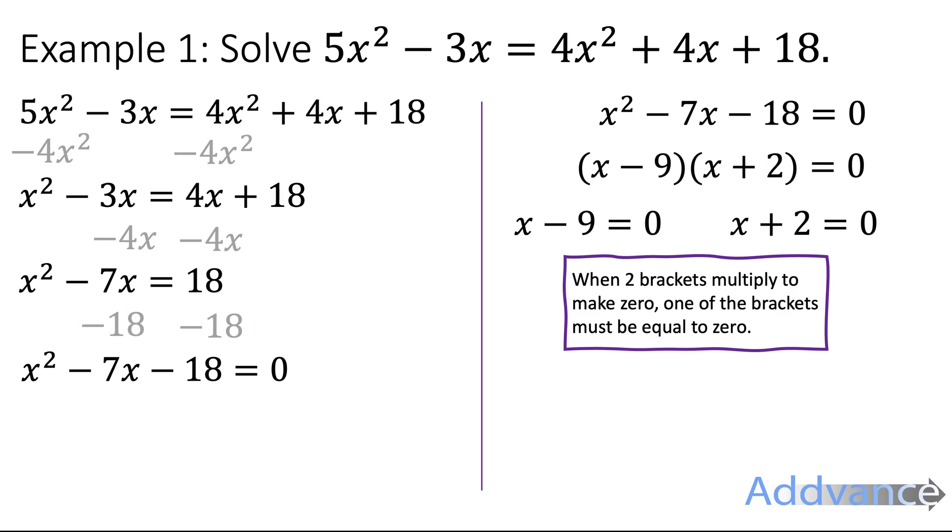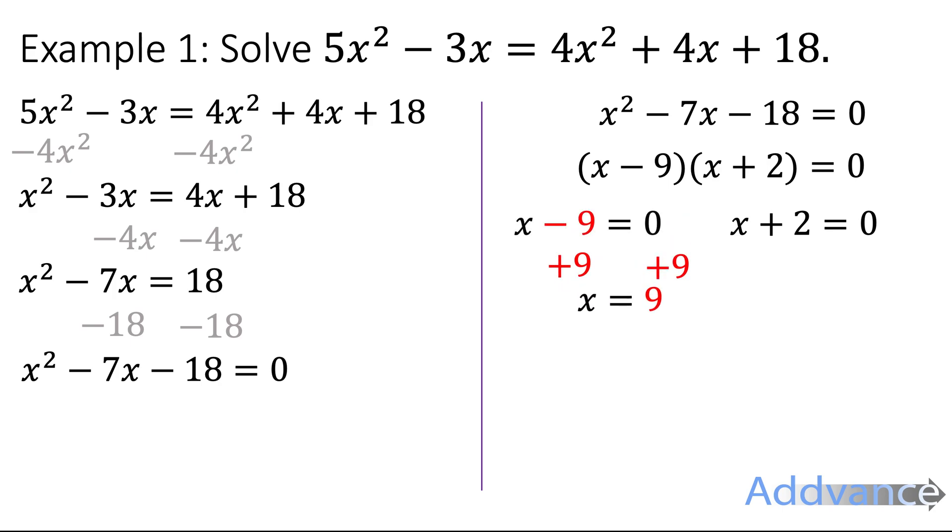So either x - 9 = 0 or x + 2 = 0. If we solve those two equations we add 9 to both sides we get x = 9 or we subtract 2 from both sides we get x = -2. And that is the final answer, either x is equal to 9 or x is equal to minus 2. And we can finish there.